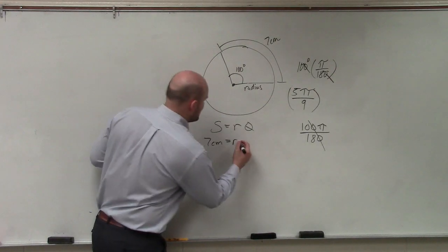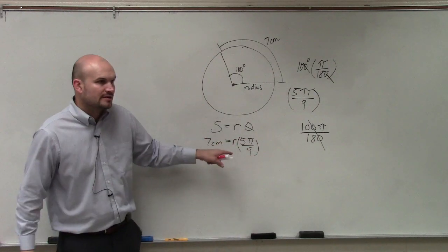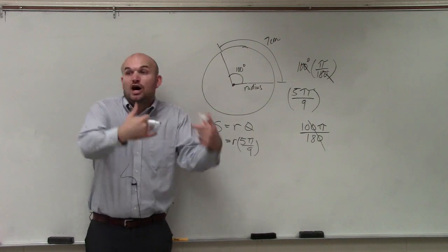So then I just multiply this by 5 pi over 9. Well, we need to solve for r. So how do you, if r is being multiplied by 5 pi over 9, you need to undo that by dividing.